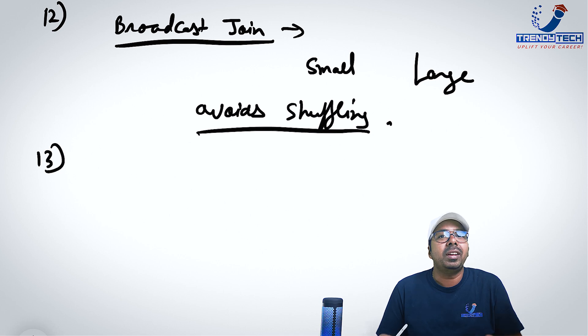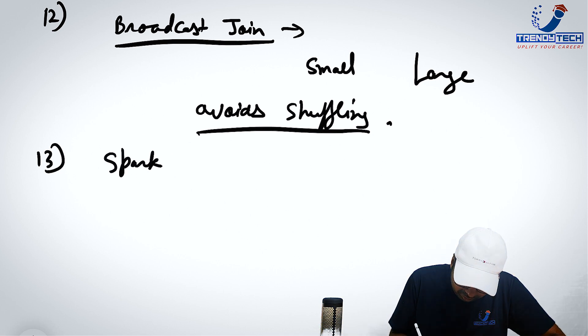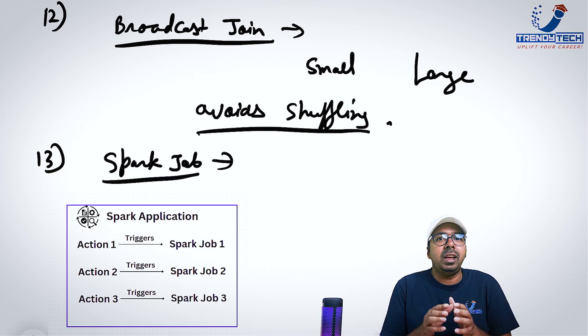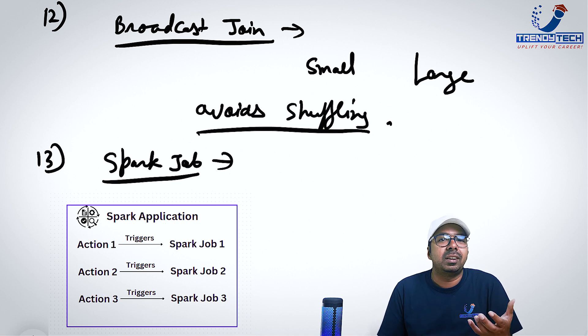Next in our list, what is a spark job? So basically, whenever you call an action, one job is triggered. So if you call three actions, there will be three spark jobs. In the most ideal scenario, it can be a little bit different because there are a lot of internal things, but in the most ideal scenario, if you fire two actions, there will be two jobs.